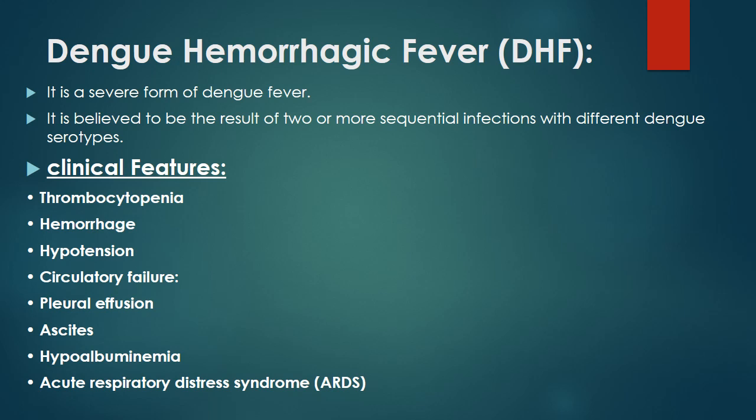Clinical features of dengue hemorrhagic fever include low platelet count and hemorrhage, such as GI bleeding, cerebrovascular bleeding, skin bleeding, or epistaxis. It occurs due to capillary leak, endothelial dysfunction, and platelet dysfunction.